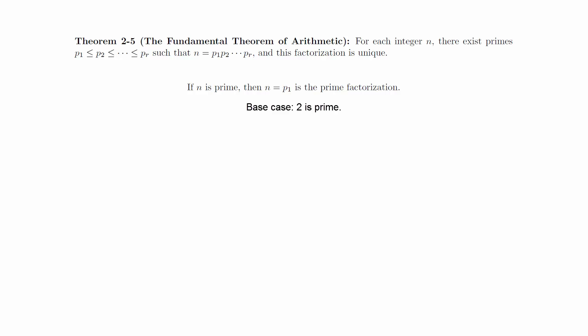For the existence proof, notice that since the number 2 is prime, we have an immediate prime factorization for it. Now suppose that the numbers 2 through k all have prime factorizations. We need to prove that k plus 1 has a prime factorization as well. If k plus 1 is prime, then we have an immediate prime factorization just as with the number 2.